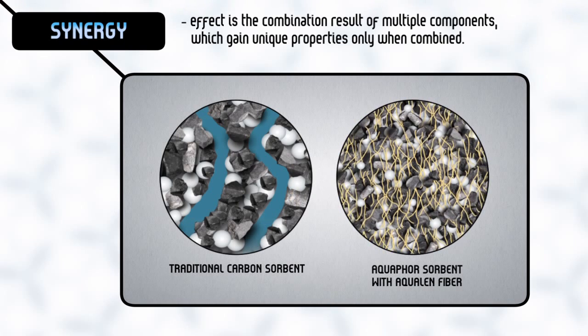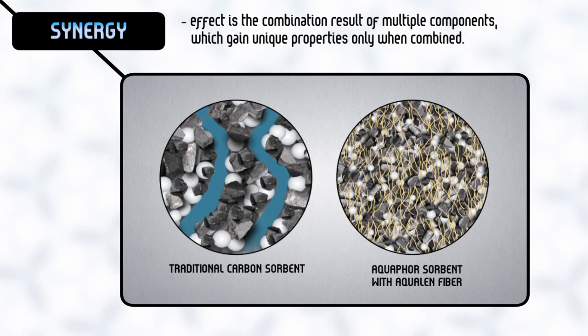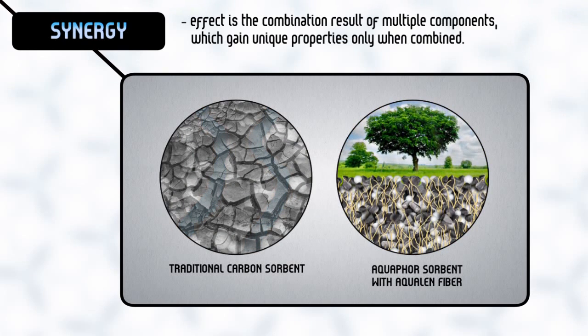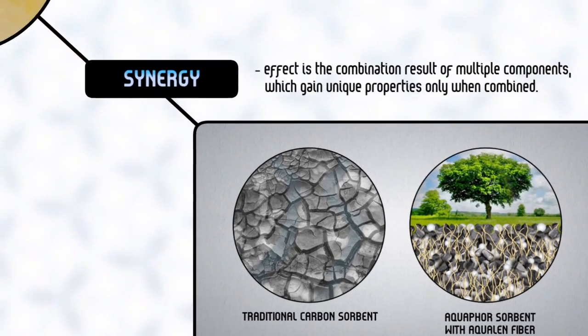Moreover, it is the Aqualan fibers mixed with granular absorbents that prevent water channeling. Much like a plant's roots allow it to hold onto soil and prevent erosion, Aqualan fibers fix or retain granules of absorbents in place to ensure that all of the water is properly filtered.